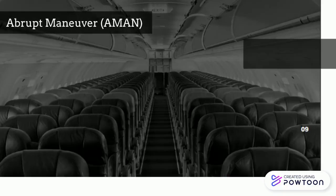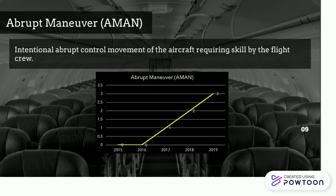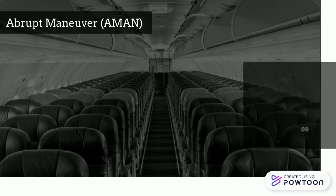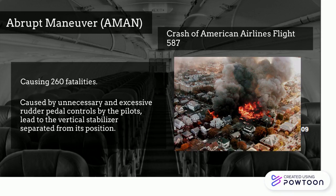Next is Abrupt Maneuver, which describes the intentional abrupt control movement of the aircraft requiring skill by the flight crew. Recent reports show there is an increasing trend in the occurrence of abrupt maneuver accidents. The crash of American Airlines Flight 587 in 2001, causing 260 fatalities, was believed to be caused by unnecessary and excessive rudder pedal controls by the pilots, leading to the vertical stabilizer separating from its position.